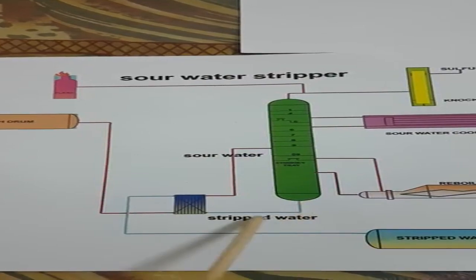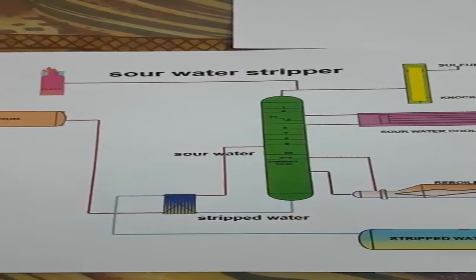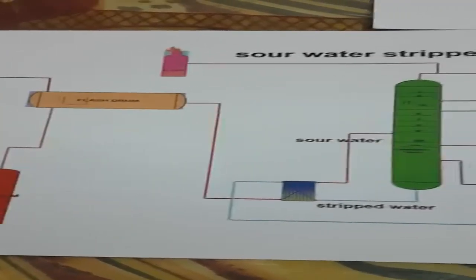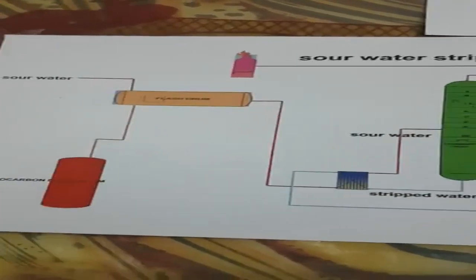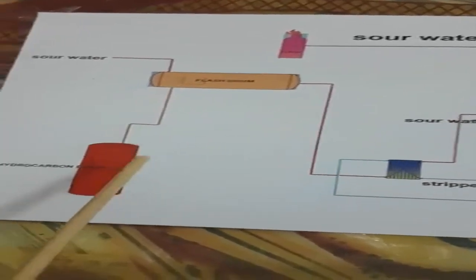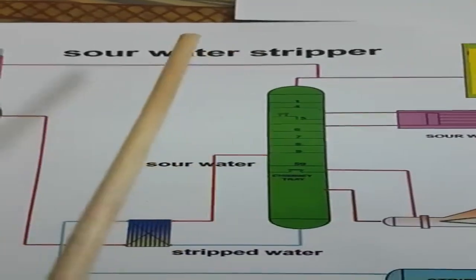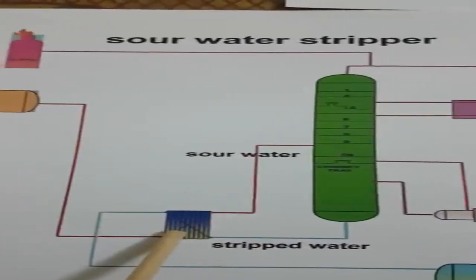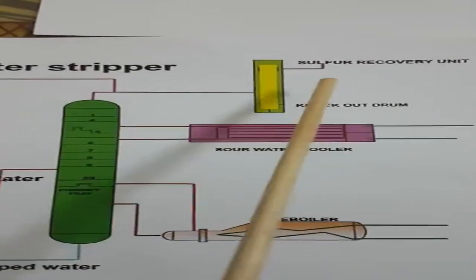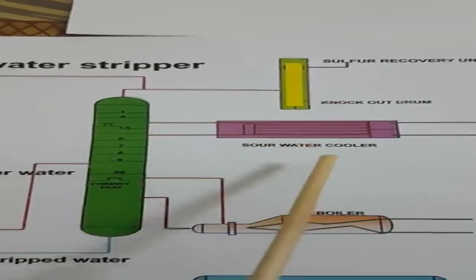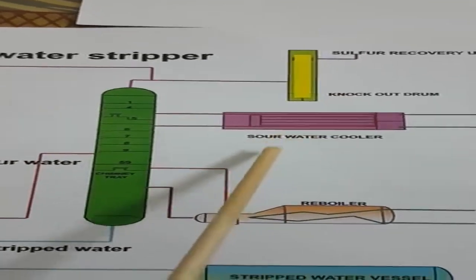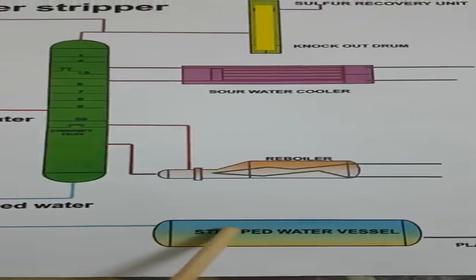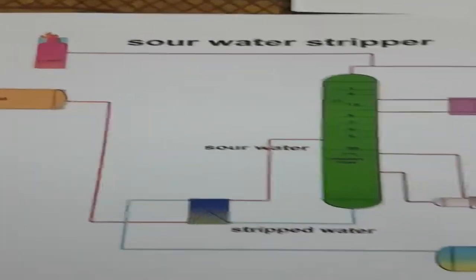Now let's go for the process description and equipment used in the sour water stripper. The equipment includes: a flash drum, hydrocarbon drain drum, sour water stripper distillation column, interchanger, knockout drum, sour water cooler or pump-around cooler, reboiler, and a strip water vessel.